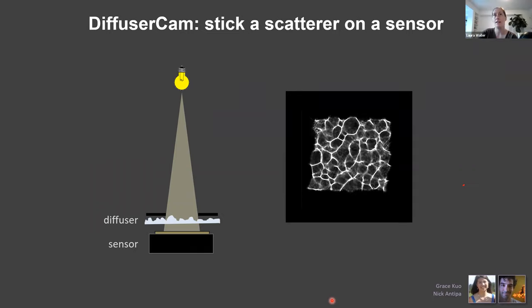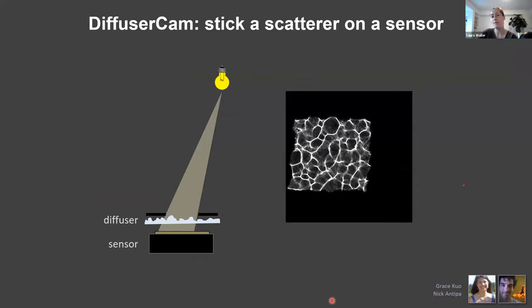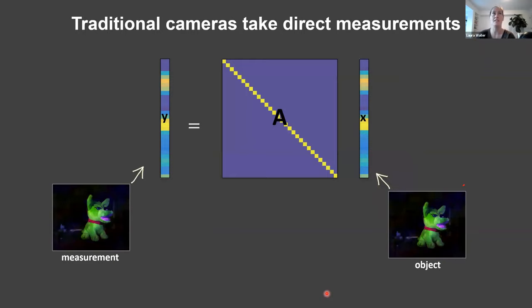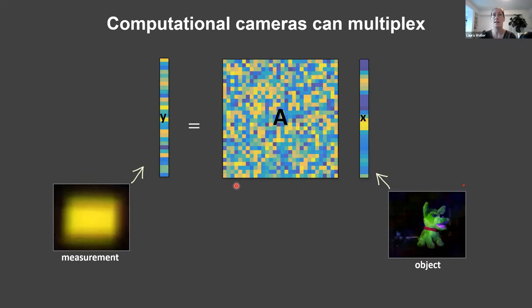If I have a point, it creates this caustic pattern. If I move that point laterally, the point spread function simply shifts. If I turn on two points at once, I get the linear sum of the intensity from each. So this is a linear system in terms of intensity, and I can write this as matrix-vector multiplication. My scene is vector X, my measurement is vector Y, and in a traditional camera your A matrix is the identity matrix — optical designers have spent centuries trying to make their forward models the identity matrix.